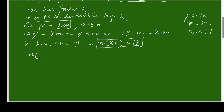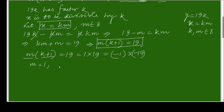Since m times (k plus 1) equals 19, I can write 19 as: 1 times 19, or minus 1 times minus 19, or 19 times 1, or minus 19 times minus 1. There are four factor pairs to consider, giving four possible values of m: plus 1, minus 1, plus 19, and minus 19.